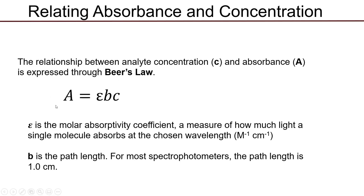To use Beer's Law, you're typically given a situation where you know concentration and epsilon and you're asked to find absorbance, or you know absorbance and concentration and you're asked to find epsilon. Generally the path length is fixed at one centimeter, you know two of the other variables, and you solve for the missing one. The utility of Beer's Law is that there is a linear relationship between absorbance and concentration.